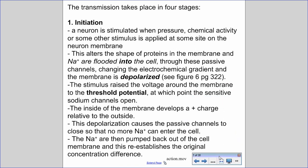When a nerve impulse occurs, the transmission takes place in four stages. In the initiation stage, a neuron is stimulated when pressure, chemical activity, or some stimulus is applied at the neuron membrane, usually around the cell body. This alters the shape of proteins in the membrane, and sodium ions flood into the cell through passive channels, changing the electrochemical gradient so the membrane becomes depolarized. The stimulus raises the voltage to the threshold potential, at which point sensitive sodium channels open up and the inside of the membrane develops a positive charge relative to the outside — the polarity reverses.